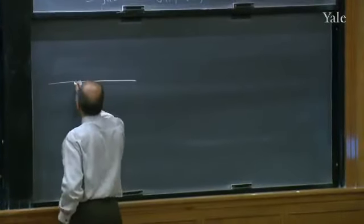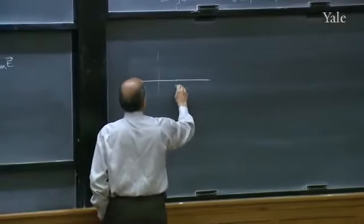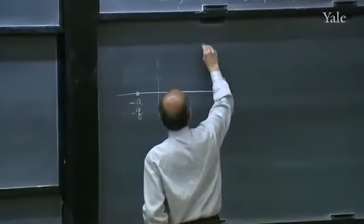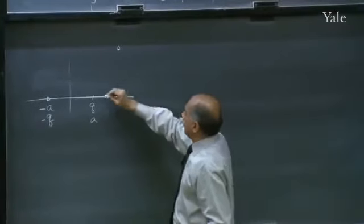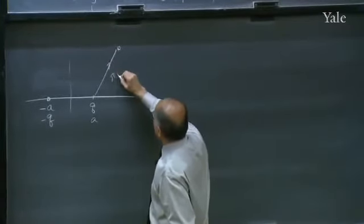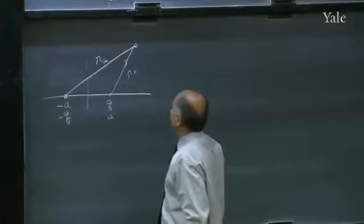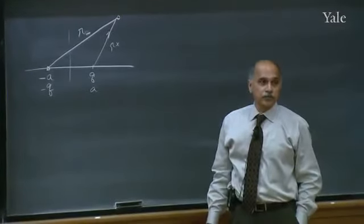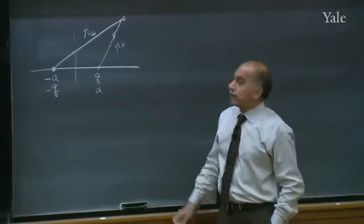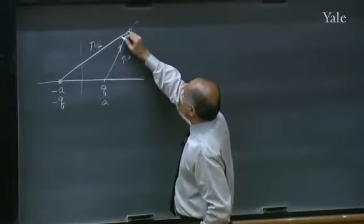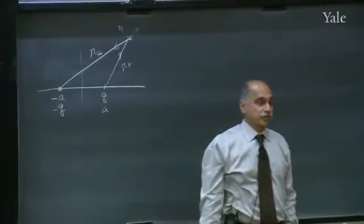I'm going to illustrate that with one simple problem - the last thing for today - and that's the dipole. So here is our dipole: a charge Q at plus a and minus Q at minus a. We want to find the field at some point. Let's call the distance from the positive charge R-plus and from the negative charge R-minus. If you want to find the electric field directly, you have to find the vector due to each charge and add the two vectors.